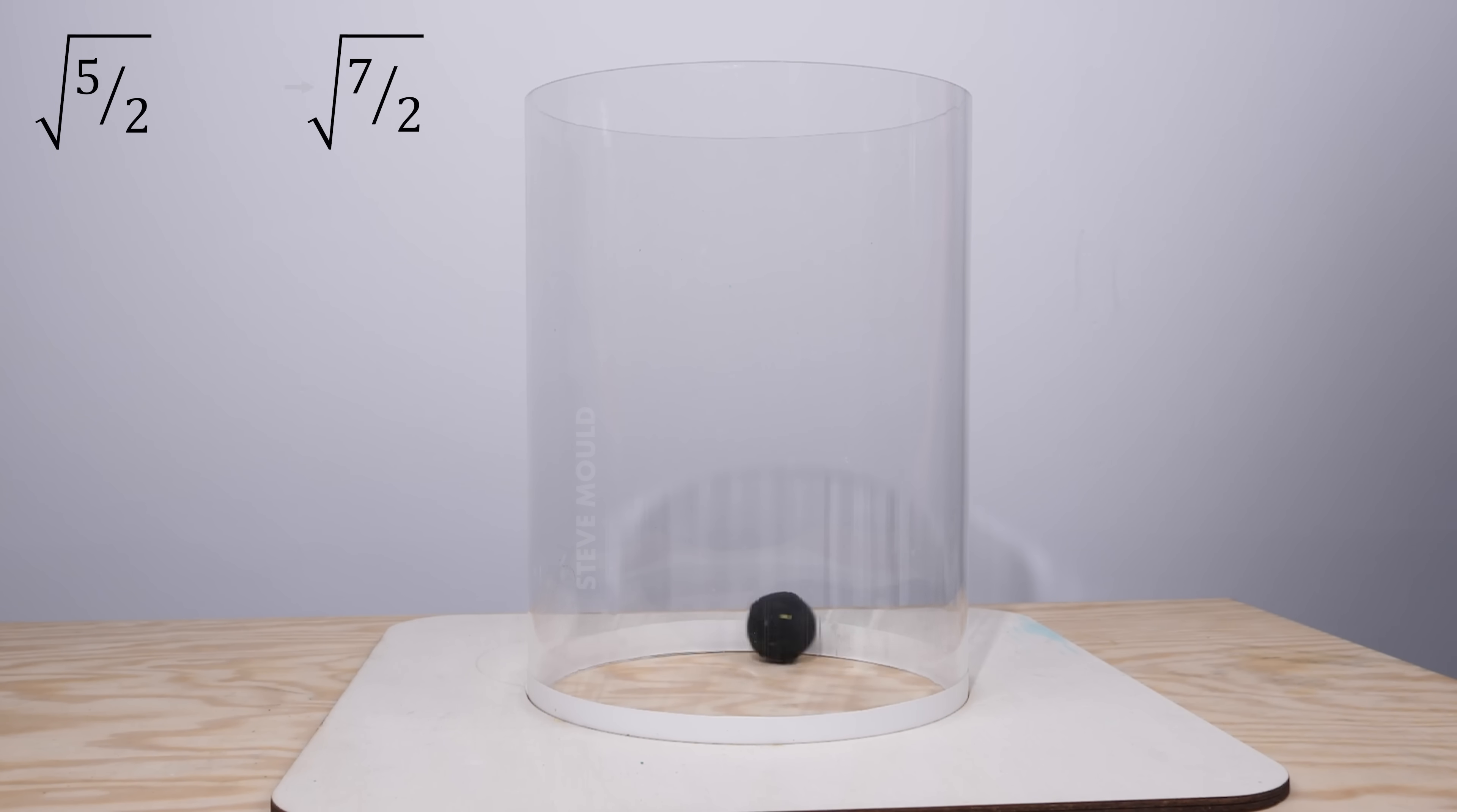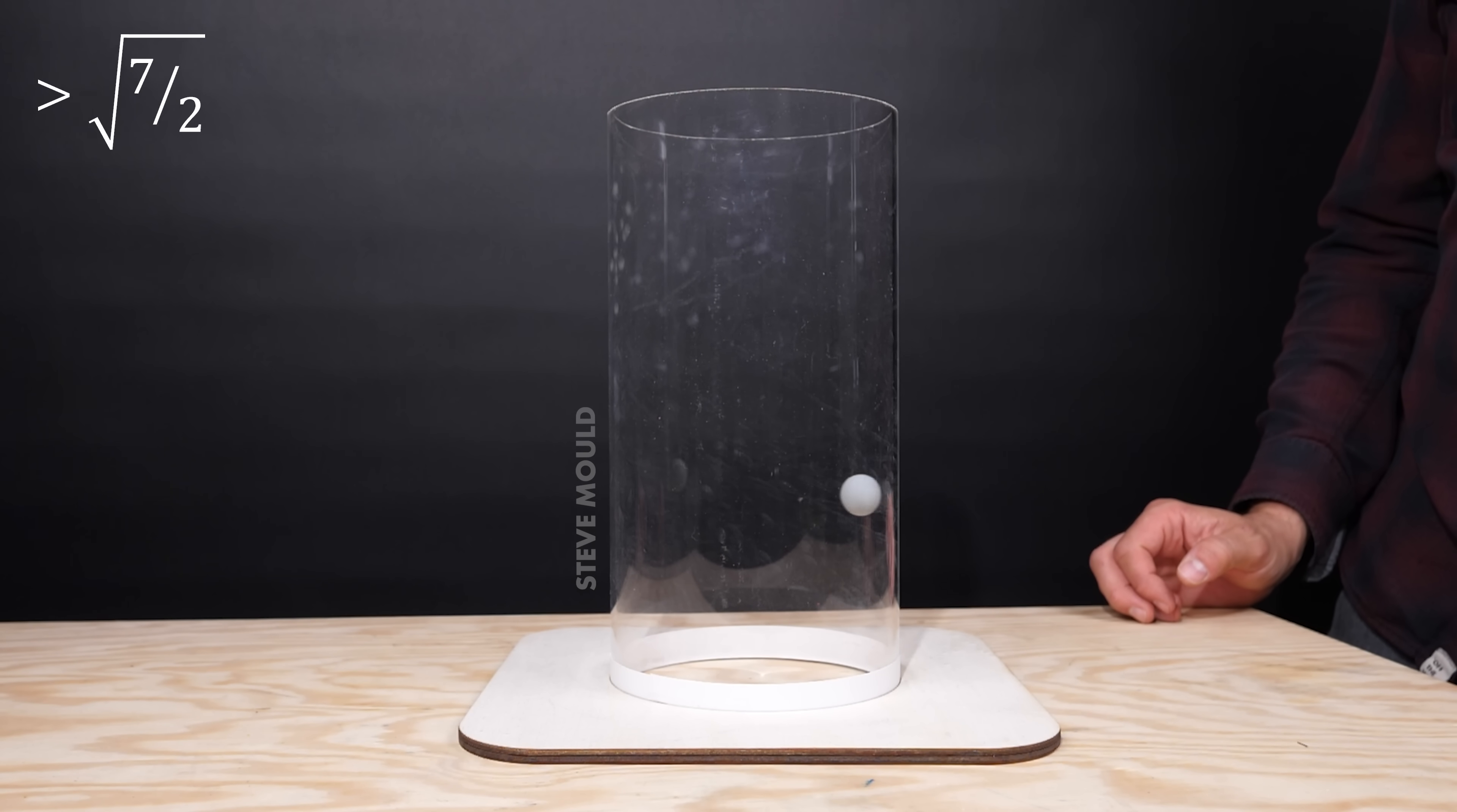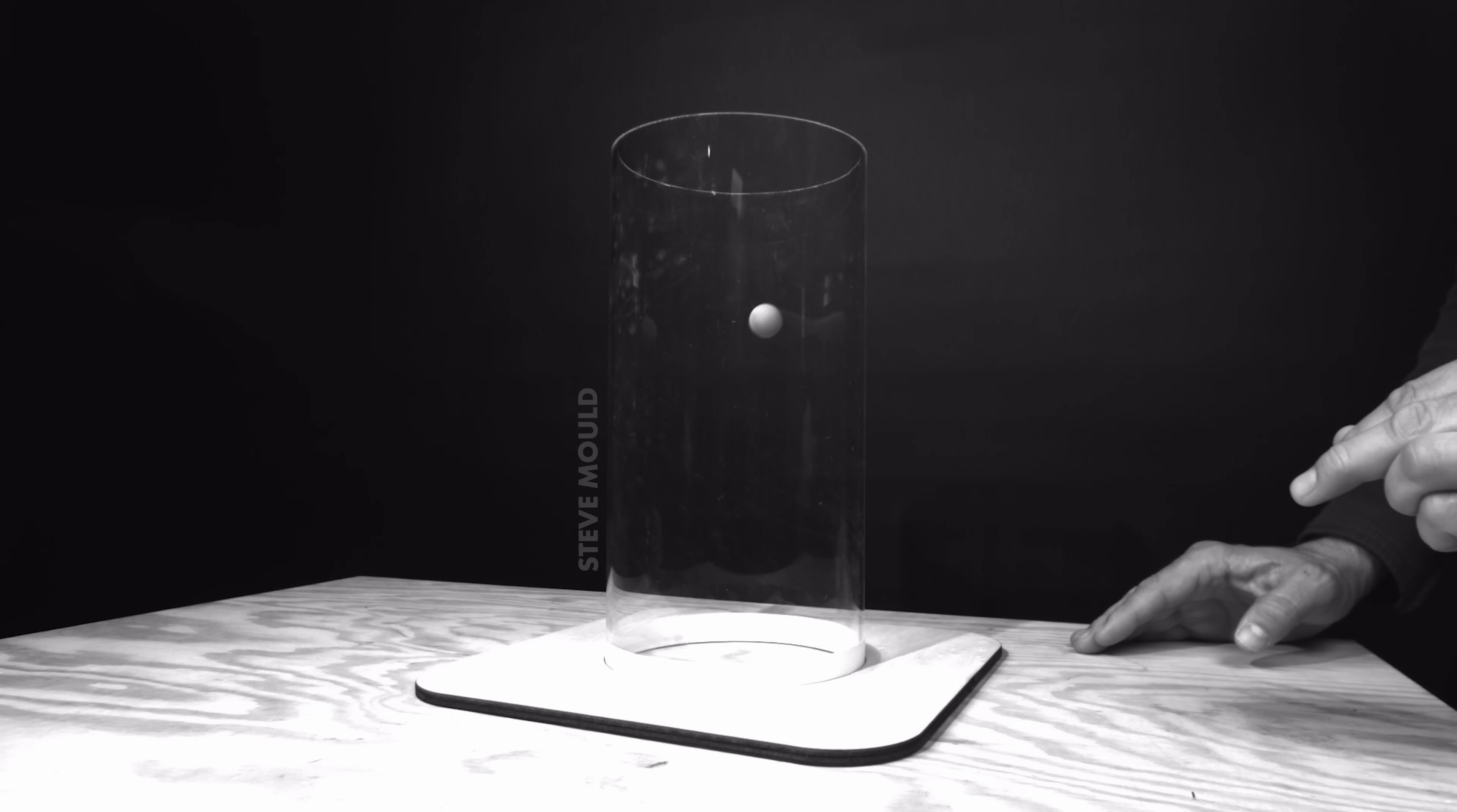Actually, on a similar note, the ratio we get for a mouse ball seems to be consistently a little bit higher than the square root of 7 divided by 2. And I think we can explain that as well. Because the ball has a solid steel core, the mass of the ball is somewhat concentrated towards the middle. That actually decreases the moment of inertia of the ball.